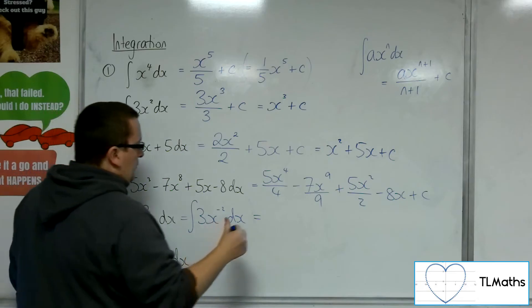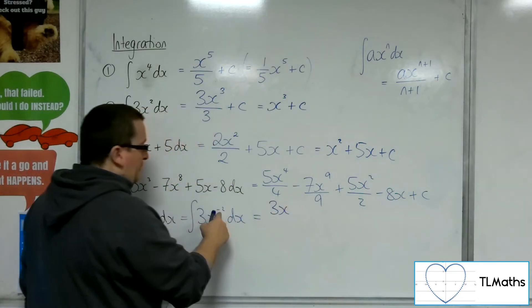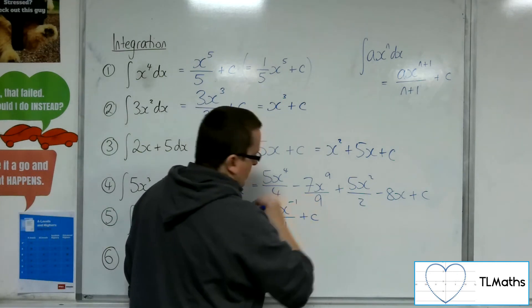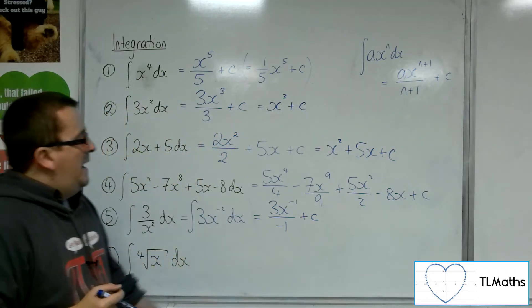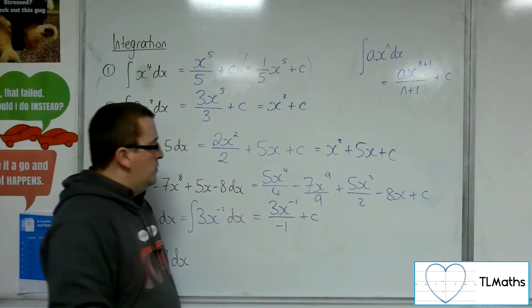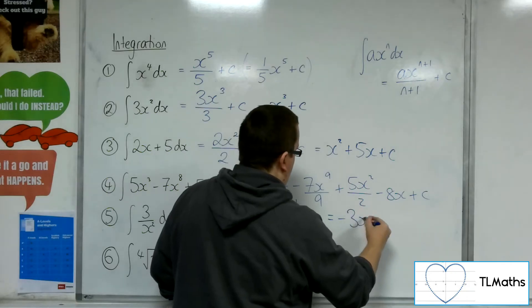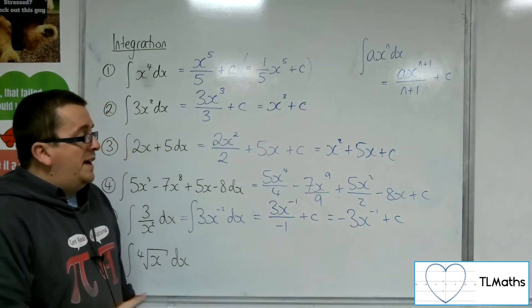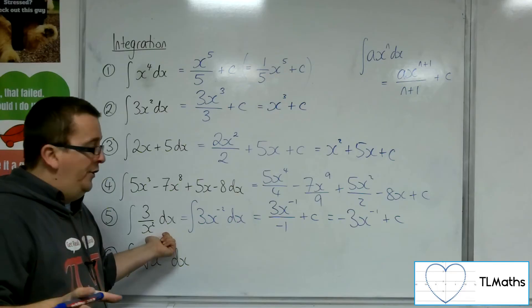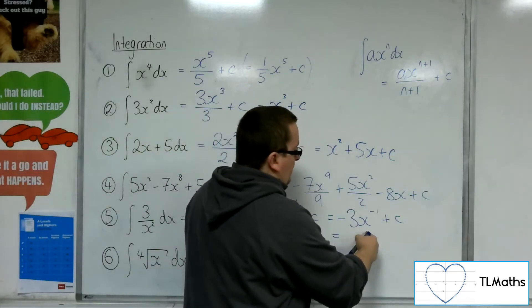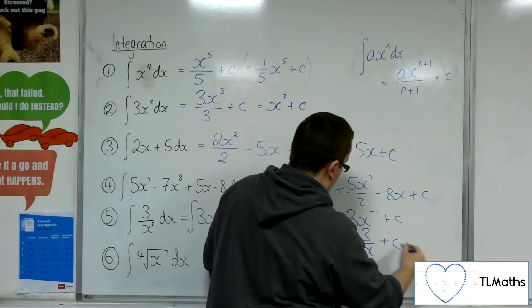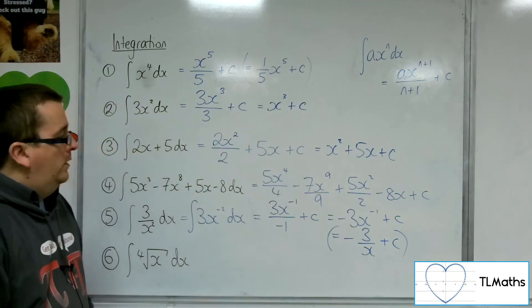So, I'm going to add 1 to the power. So, minus 2 plus 1 is minus 1. And divide by the new power, plus c, the constant of integration. Now, I don't want to leave it like that, because we've got the 3 divided by minus 1, I can write as minus 3. So, this would be minus 3x to the minus 1 plus c. Now, you can, if you wanted to, rewrite that back into a format similar to the original problem. You don't have to. Minus 3 times x to the minus 1 is the same as minus 3 times 1 over x, which is minus 3 over x. That is an equivalent form of the integral.